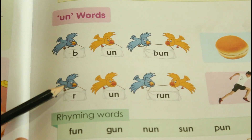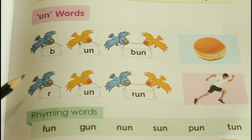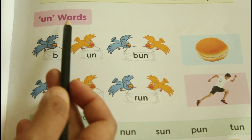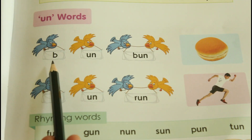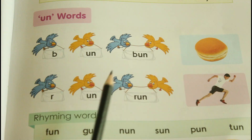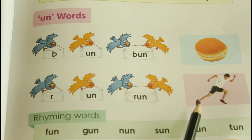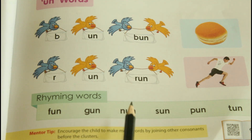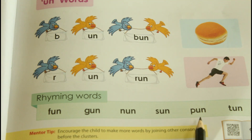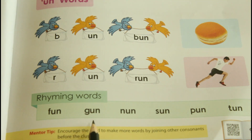The next word family is UN. UN words. B-an: ban. R-an: ran. Now try to read these words — very good! San, pan, tan, fan, gan, nan. These are the UN family words.